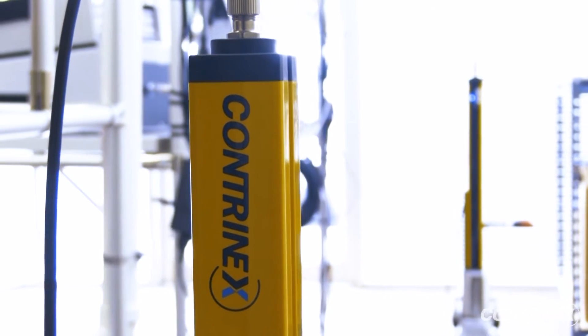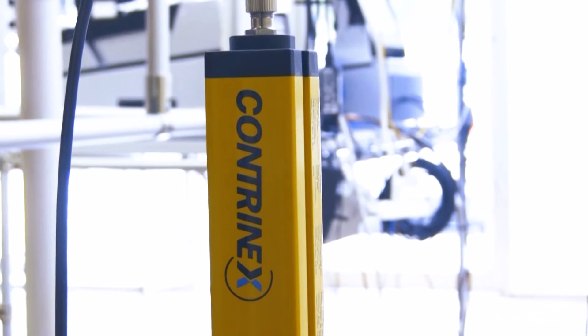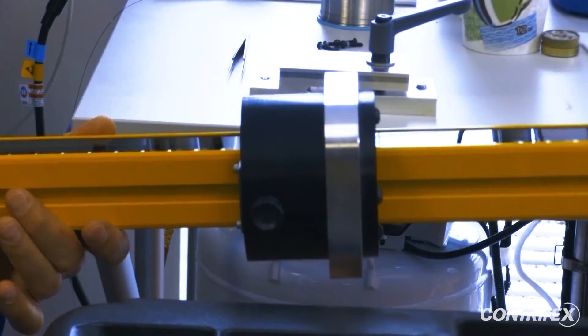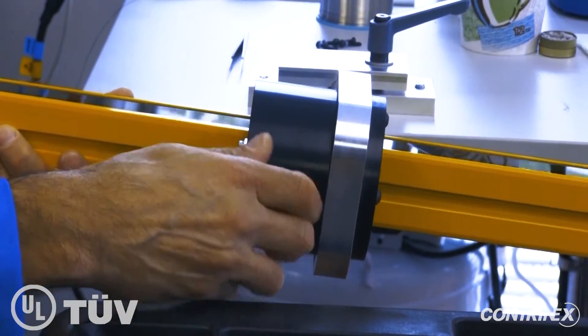Contranex USA is excited to announce the highly popular Safetinex line is now assembled in America. The safety light curtains and safety access control barriers are in high demand.